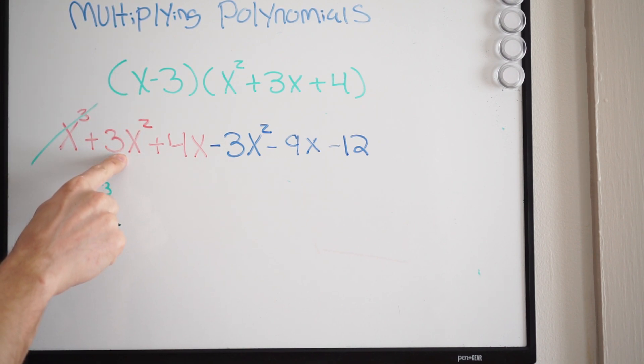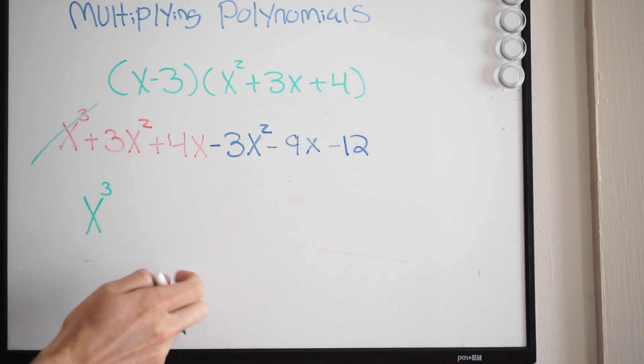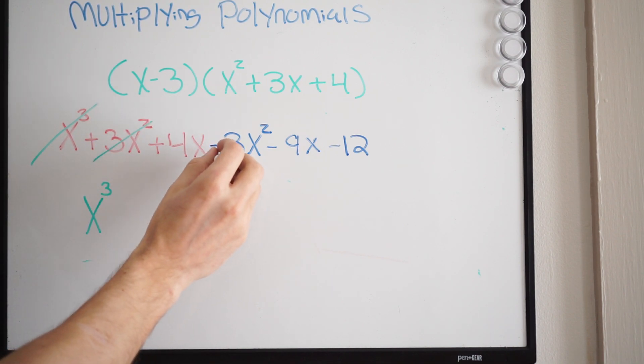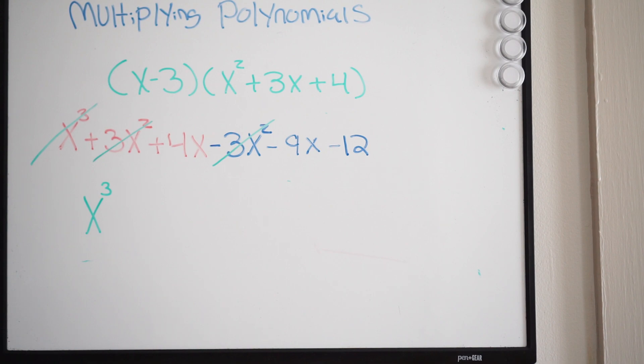And then we have a 3x squared and a negative 3x squared. Well, those simply are just going to cancel out. We don't have to write anything there. And then we have a 4x and a negative 9x, so this is going to become negative 5x.